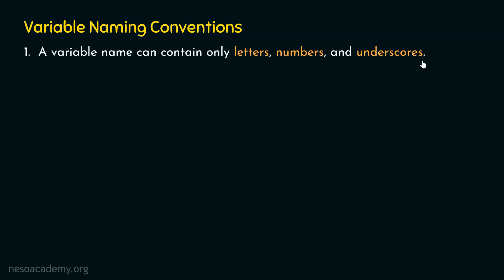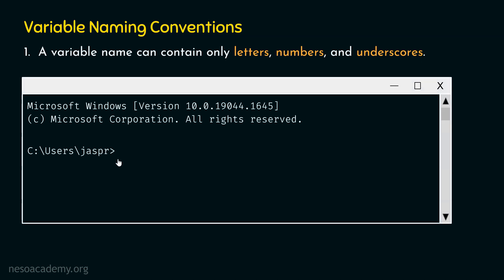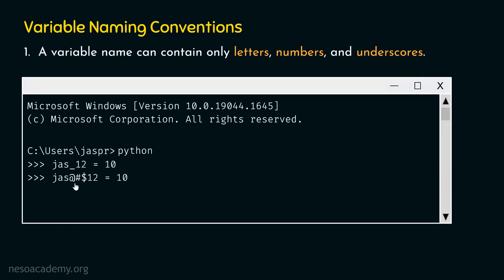These special characters cannot be used while naming variables. For example, if we go to our command prompt and type python and hit enter, we can activate the Python interactive shell. If we type jazz_12 = 10 and hit enter, we will not get any error. But if we write jazz@#$1 = 10 and hit enter, we will get a syntax error — invalid syntax — from Python, because special characters are not allowed in variable names.